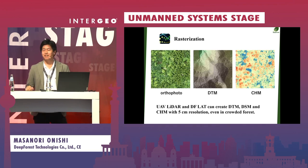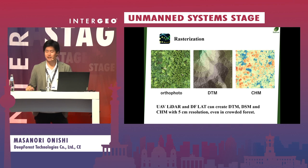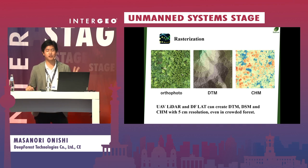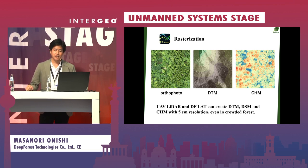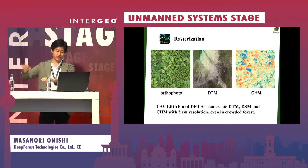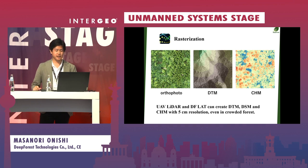DF-RAT can rasterize point cloud data to GeoTIFF data. UAV LiDAR and DF-RAT can create DTM, DSM, and CHM with 5-centimeter resolution, even in dense forests. DTM is Digital Terrain Model, DSM is Digital Surface Model, and CHM is Canopy Height Model — the difference between DSM and DTM.